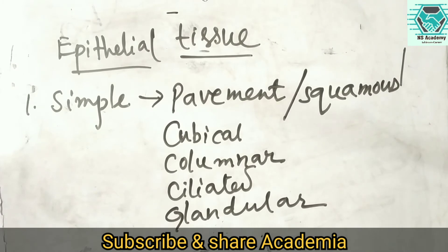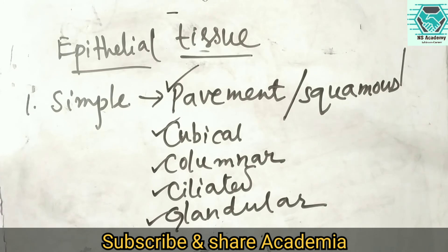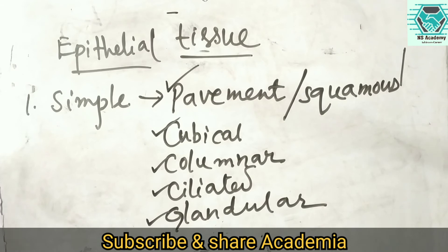Simple epithelial tissue is further subdivided into five classes: number one is pavement or squamous epithelial tissue, number two is cuboidal epithelial tissue, number three is columnar epithelial tissue, number four is ciliated epithelial tissue, and number five is glandular epithelial tissue. All five categories of simple epithelial tissue consist of a single layer of epithelial cells above a basement membrane.